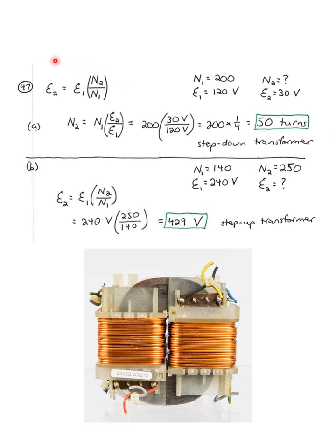But let's actually do the equation that E in the secondary, the voltage in the secondary, is the voltage in the primary times N2 over N1. And so, we solve for N2 equals N1 over the ratio of those voltages, 200 times 300 over 120. There's that cutting it by a factor of four. So, 200 times 1 fourth is 50 turns for this step-down transformer.